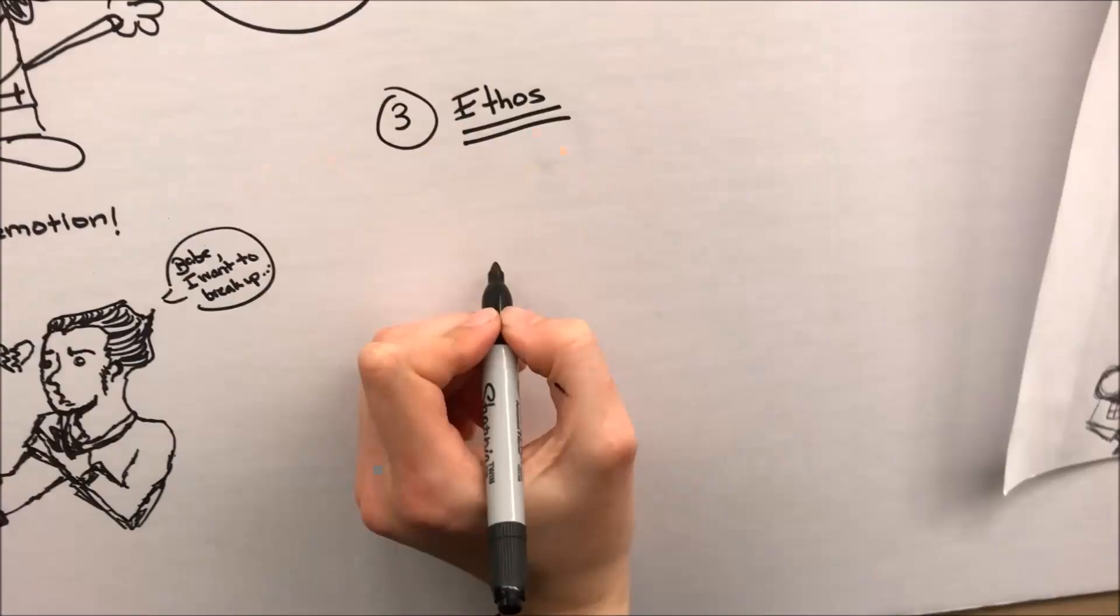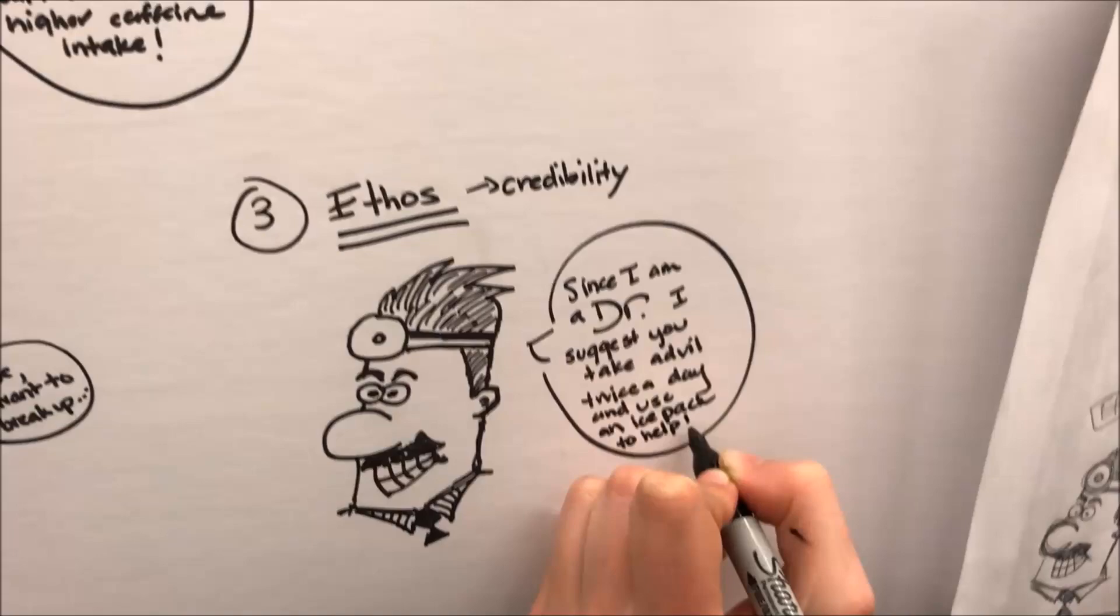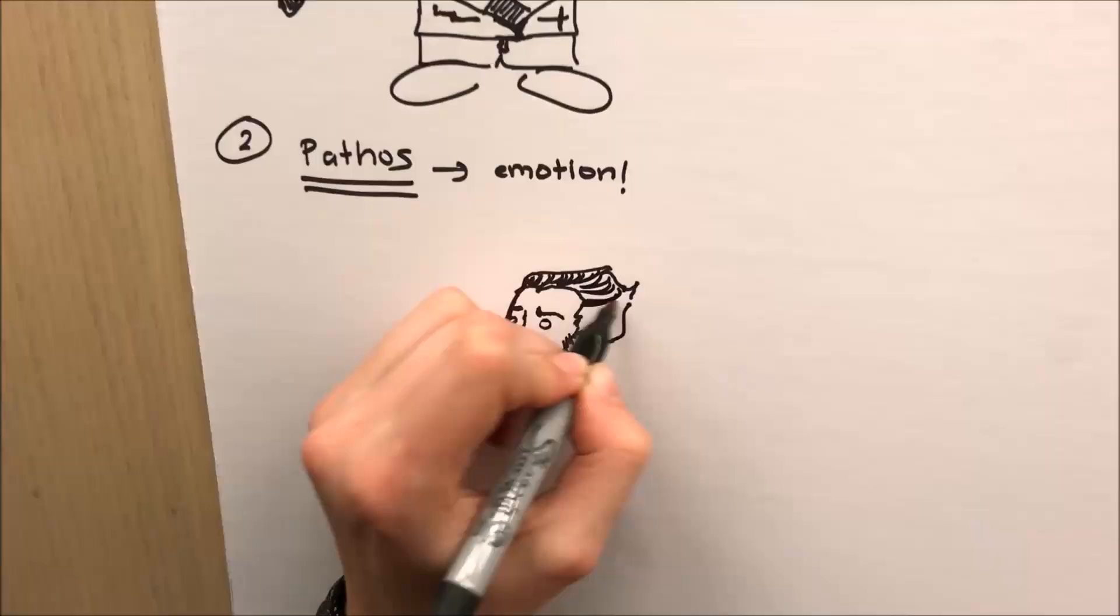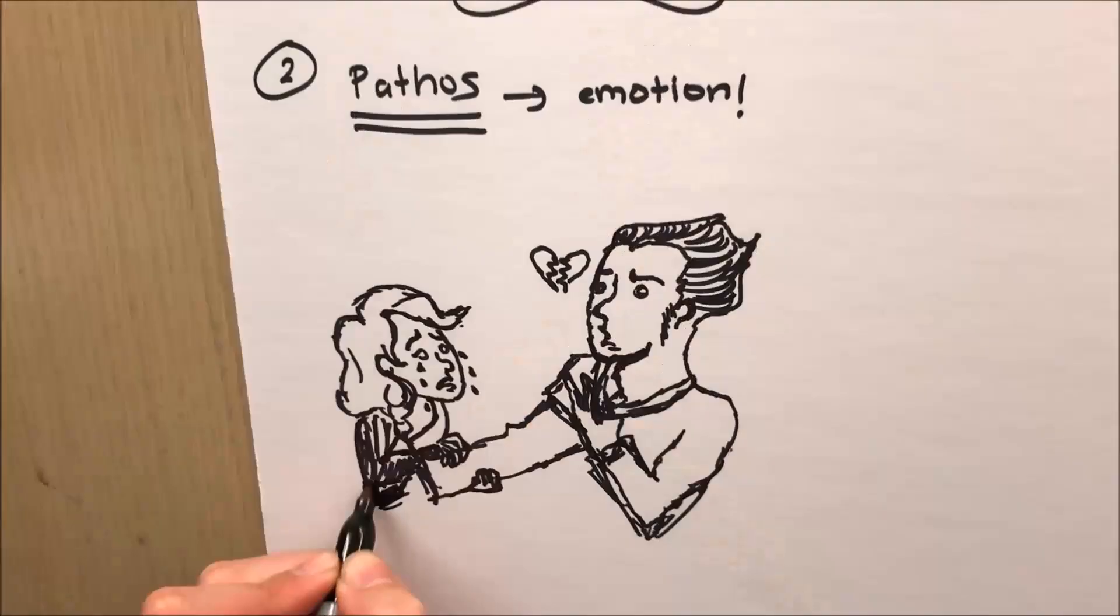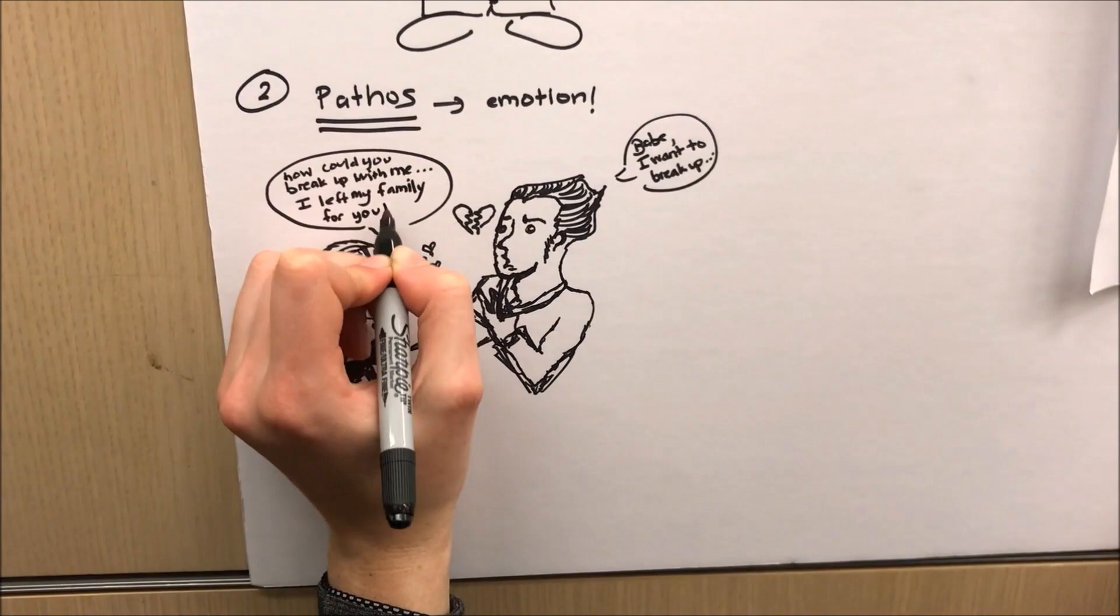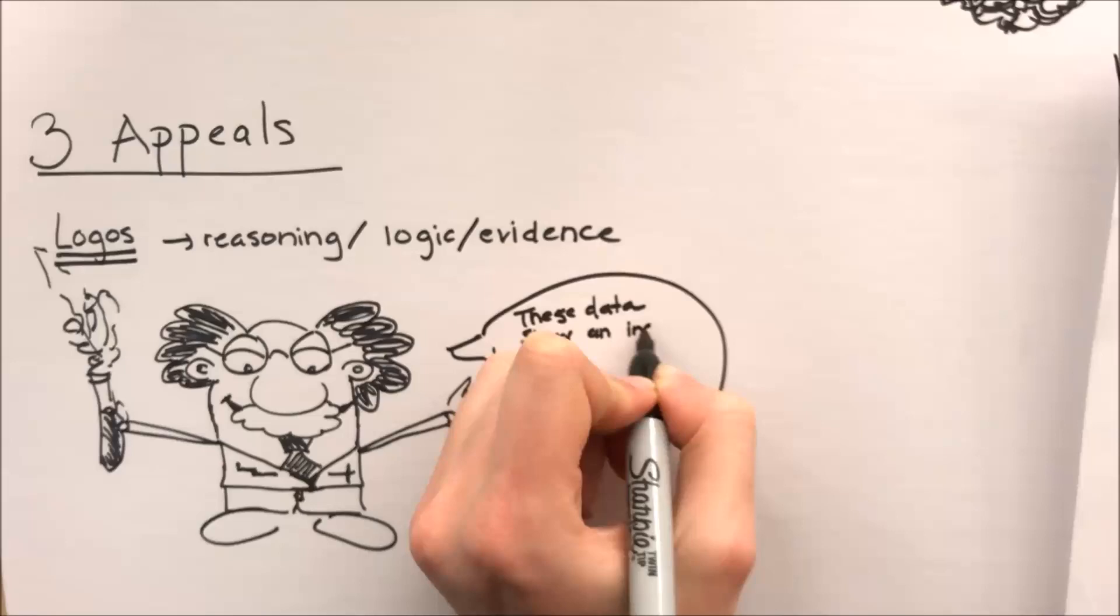Now let's look at the three rhetorical appeals: ethos, pathos, and logos. You can appeal to ethos by offering evidence that you are credible. You can appeal to pathos by drawing on the emotions or interests of the audience so they will be sympathetic to your arguments. And you can appeal to logos by offering a clear, reasonable idea and backing it up with examples and details.